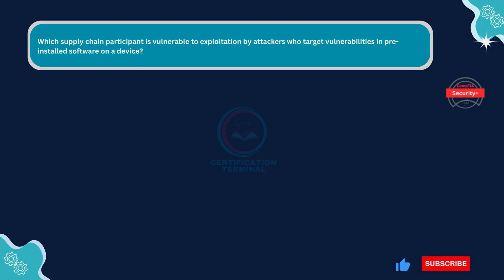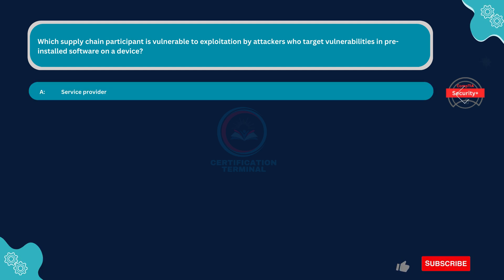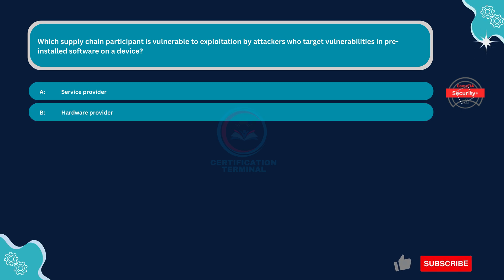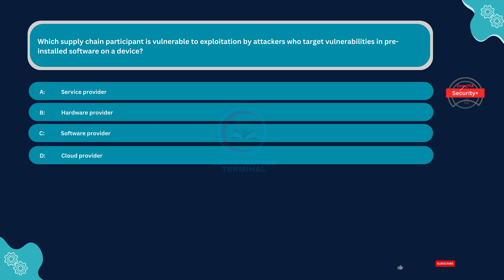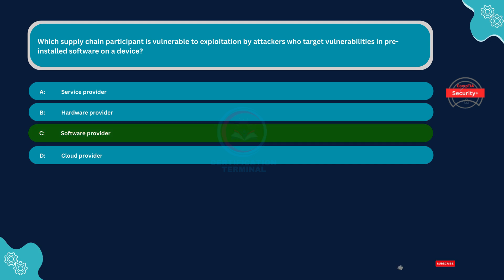Which supply chain participant is vulnerable to exploitation by attackers who target vulnerabilities in pre-installed software on a device? Option A: Service Provider. Option B: Hardware Provider. Option C: Software Provider. Option D: Cloud Provider. The correct answer is Option C: Software Provider.